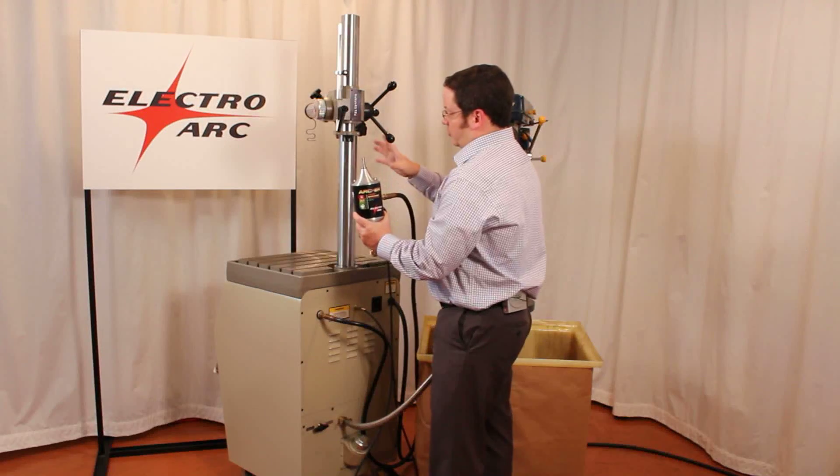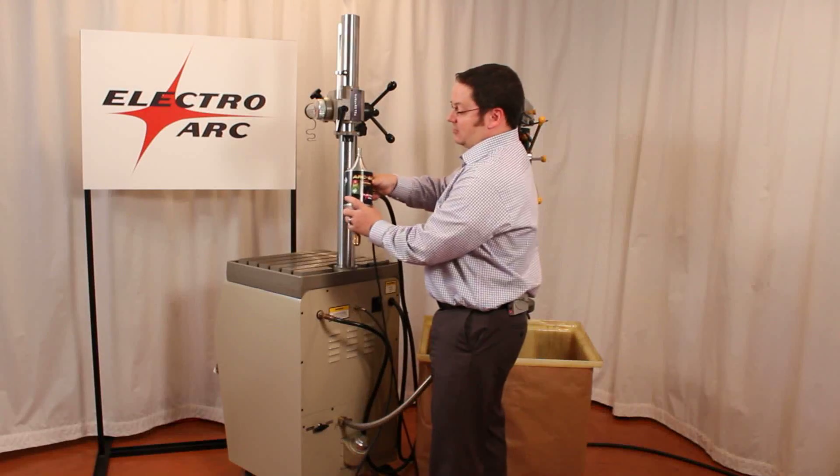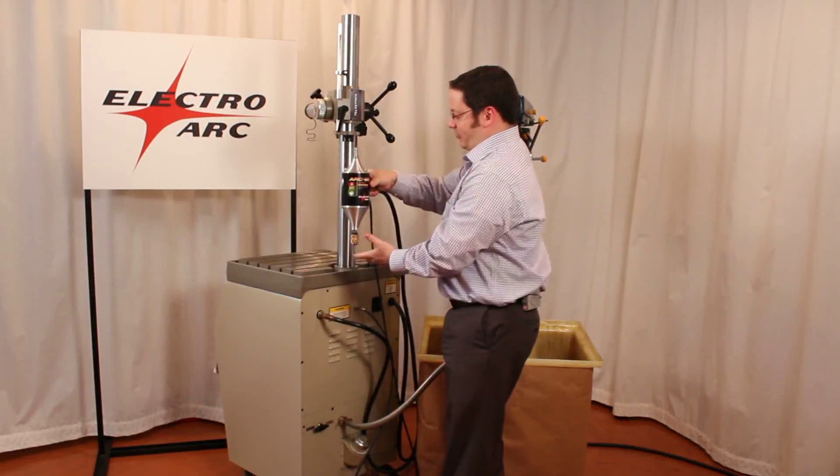This setup shows the 2SE with the tabletop and fixture. To make this a really easily portable option for you, all you're going to do is remove it from your structure.